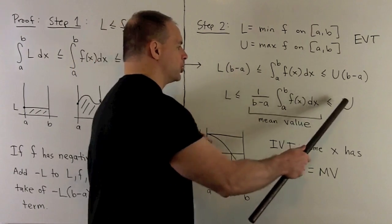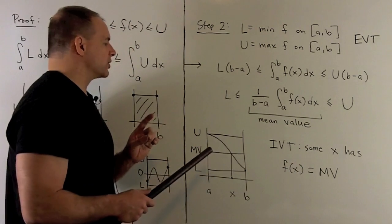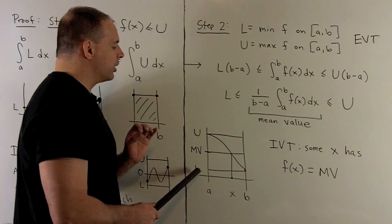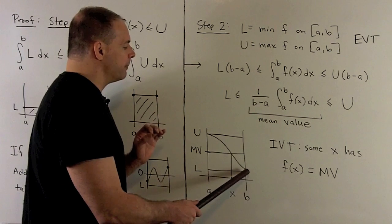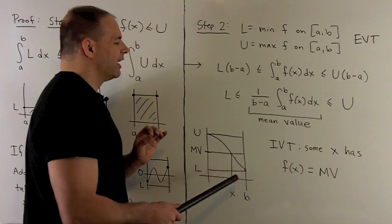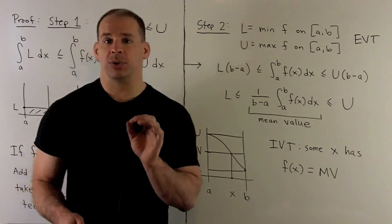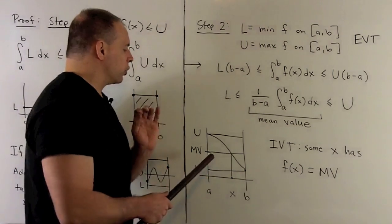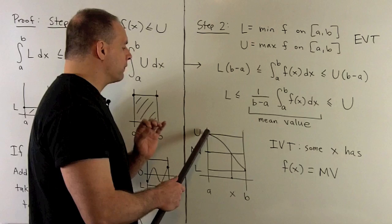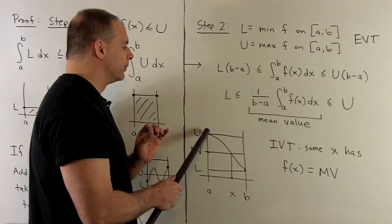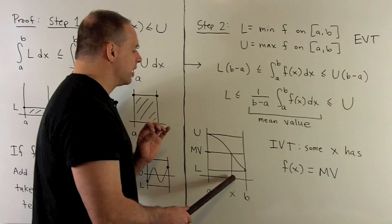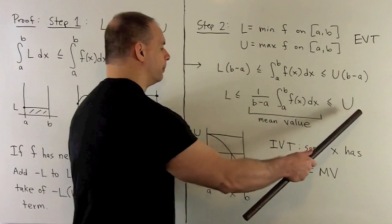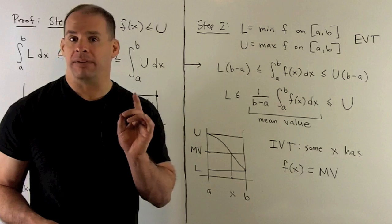Now, you'll note here, what's the picture for this? So, for instance, we're going to have U hit the function at its maximum. L is going to hit the function at its minimum. So, we'll have something like this. Then, because we have F continuous on a closed interval, the intermediate value theorem says that the graph of our function is going to hit every value going from L to U. So, somewhere in here, there's going to be an X that when we apply our F, we're going to hit this mean value, which is between L and U. And that's the statement of our mean value theorem.